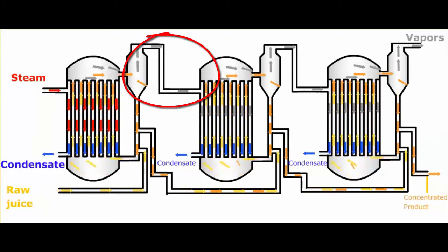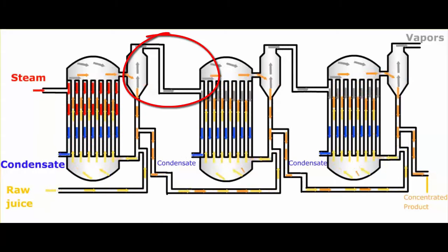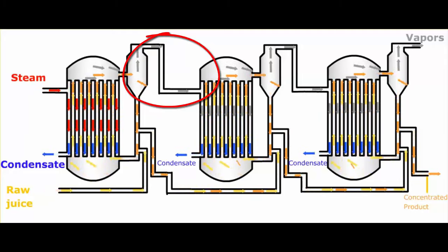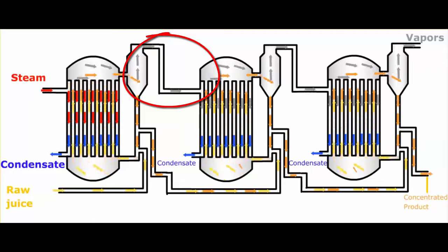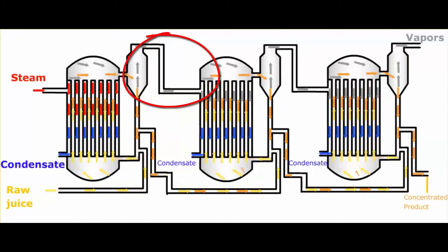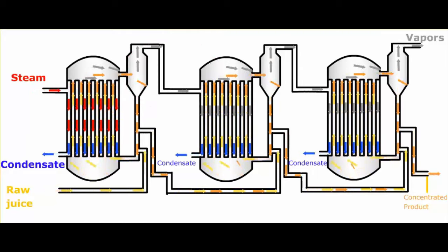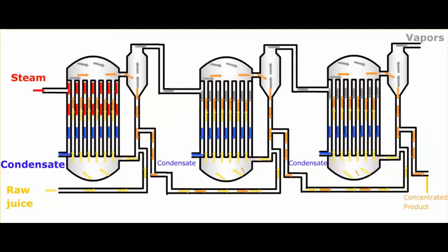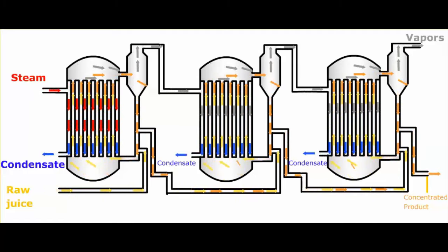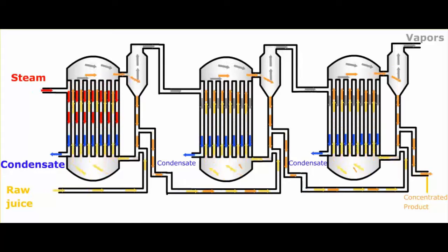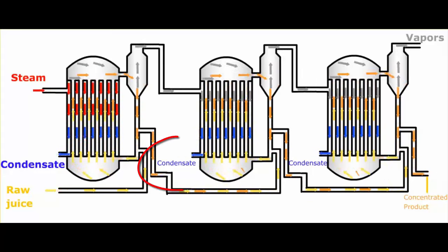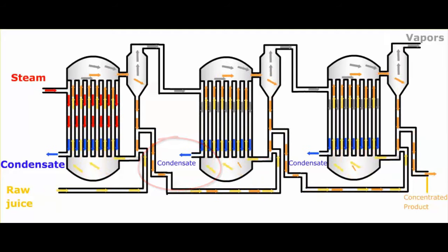The vapors leave the first effect and rather than discharging them into the atmosphere, those vapors then enter the second effect as the heating medium. Note that the heating medium in the first effect was steam, and now for the second effect the heating medium is the vapor coming from the first effect. Those vapors will then condense in the heating section and they will leave as condensate.